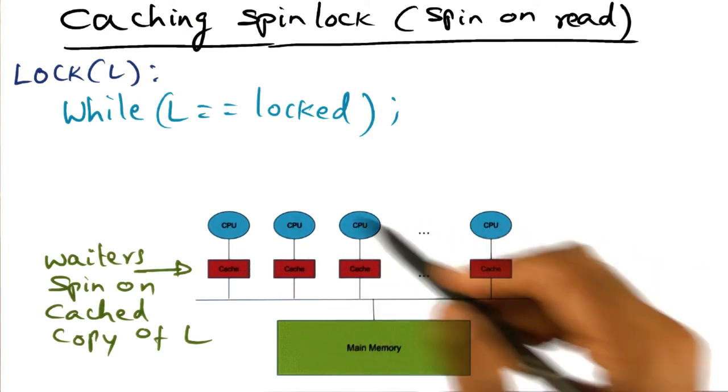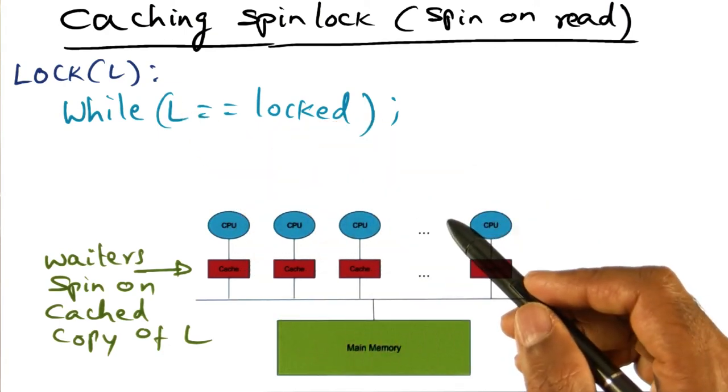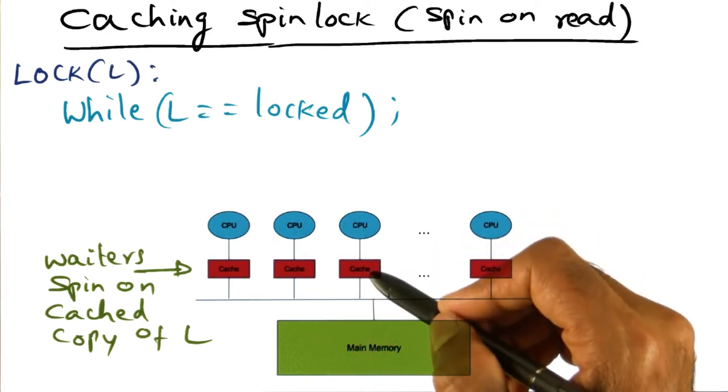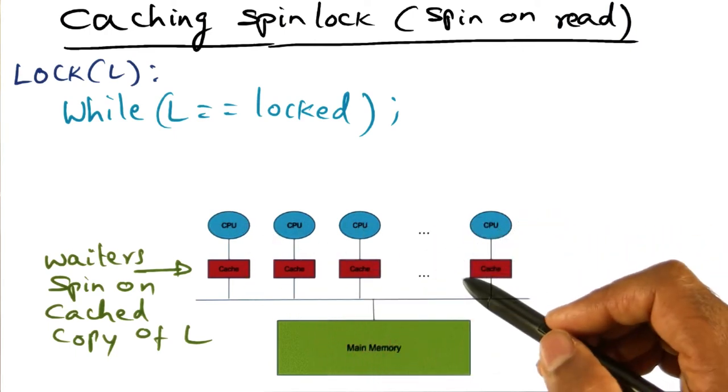And there could be any number of processors waiting on the lock simultaneously. No problem with that because all of them are going to be spinning on the local value of L in the respective caches.